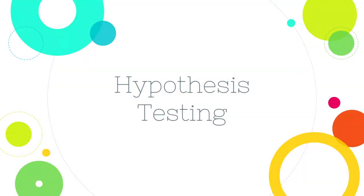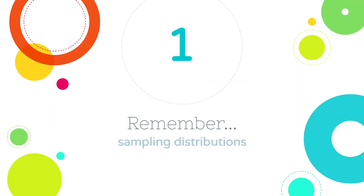We're going to talk about hypothesis testing, which is the natural extension from sampling distributions. This all builds on what we just learned about the idea of a sampling distribution, which is the distribution of a statistic for all samples of the same size from a single parent population.